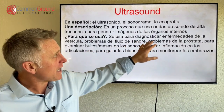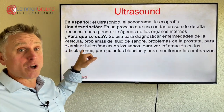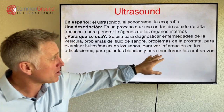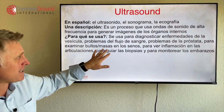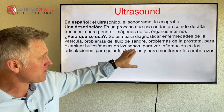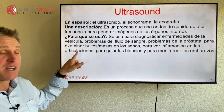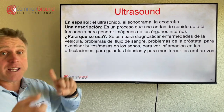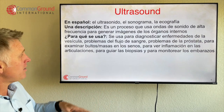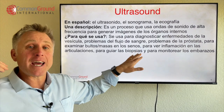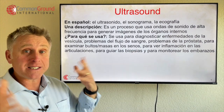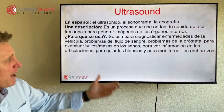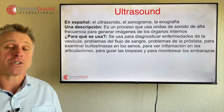¿Para qué se usa? Se usa para diagnosticar enfermedades de la vesícula — it's used to diagnose gallbladder diseases. Problemas del flujo de sangre, problems with blood flow. Problemas de la próstata, prostate problems. Para examinar bultos o masas en los senos, to examine lumps or masses in the breasts. Para ver inflamación en las articulaciones, to see inflammation in the joints — las articulaciones is joints, as is coyunturas. Para guiar las biopsias, to guide biopsies. Y para monitorear los embarazos, and to monitor pregnancies.